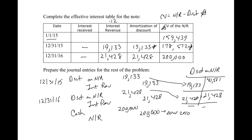This completes the non-interest-bearing note example. On a test, make sure you identify whether a note is non-interest bearing or interest bearing. The next video will cover an interest-bearing note, which has a stated rate, so there will be interest received. Watch both videos and compare and contrast the two styles so you're ready for test time. Hopefully this helped with non-interest-bearing notes — also called zero interest-bearing notes. Tune in to the next one!